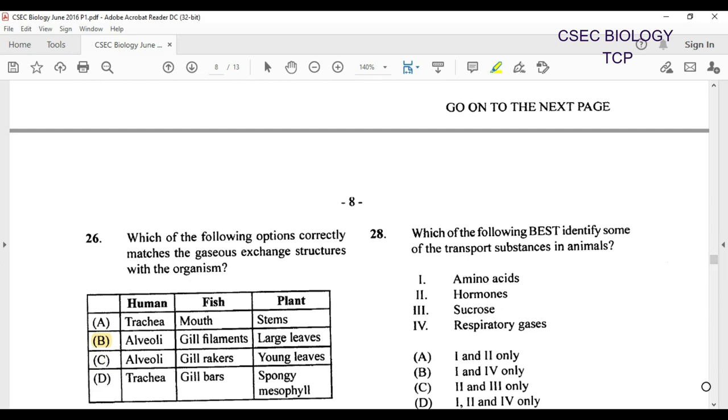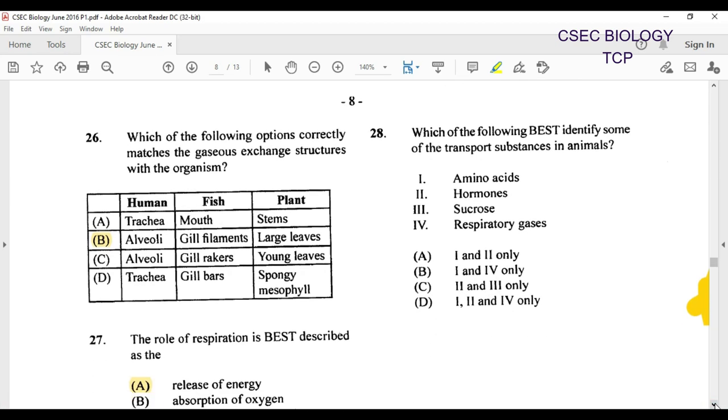We move on into item 28. Which of the following best identifies some of the transport substances in animals? Things that are transported in animals. We have amino acid, that is the smallest part of protein. We have hormones, they're pretty much chemical messengers. They move from place to place to cause the body to change. We have adrenaline and so many other hormones. And then we have sucrose. Sucrose, that is like cane sugar, but we use sugar as glucose. And then we have the respiratory gases, carbon dioxide and of course oxygen. So I would eliminate three. So my answer here would have been one, two, and four, making it D as my choice for this particular question.